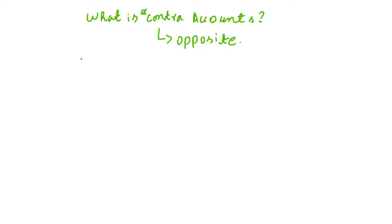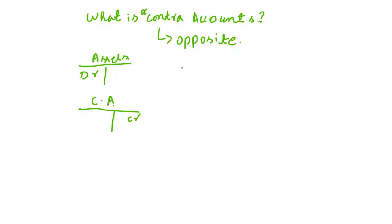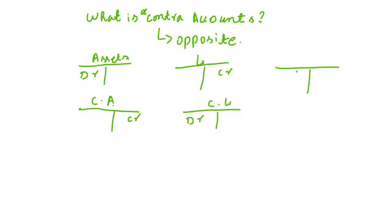For example, an asset's normal balance is debit, but the contra asset account balance is credit. Similarly, a liability's normal balance is credit, but in the case of a contra liability, the balance is debit. We apply the same concept to equity.